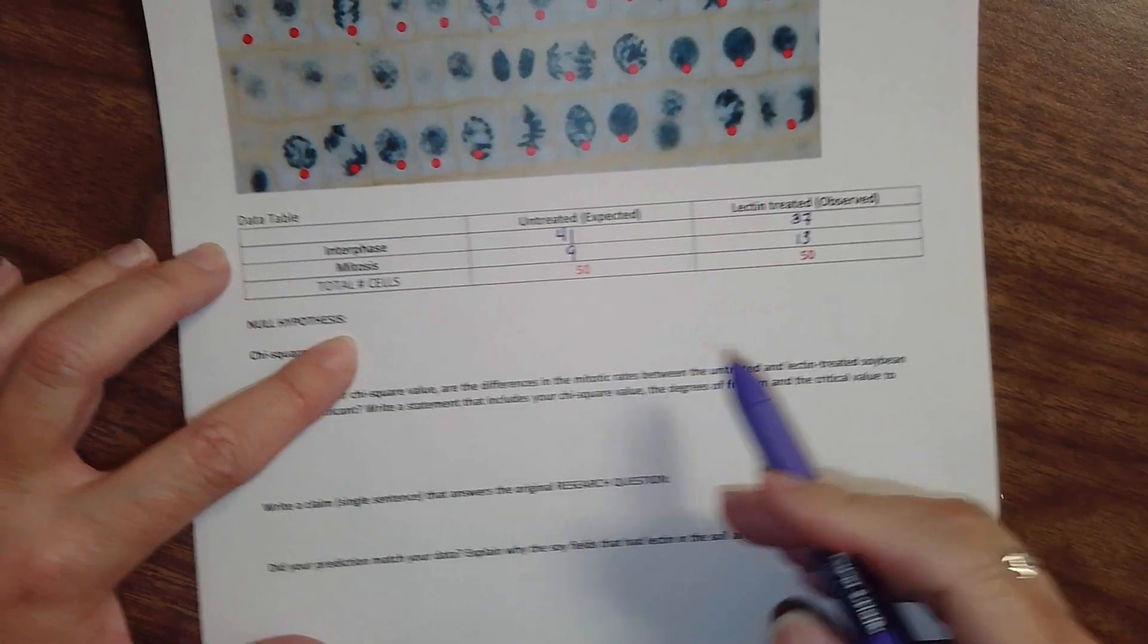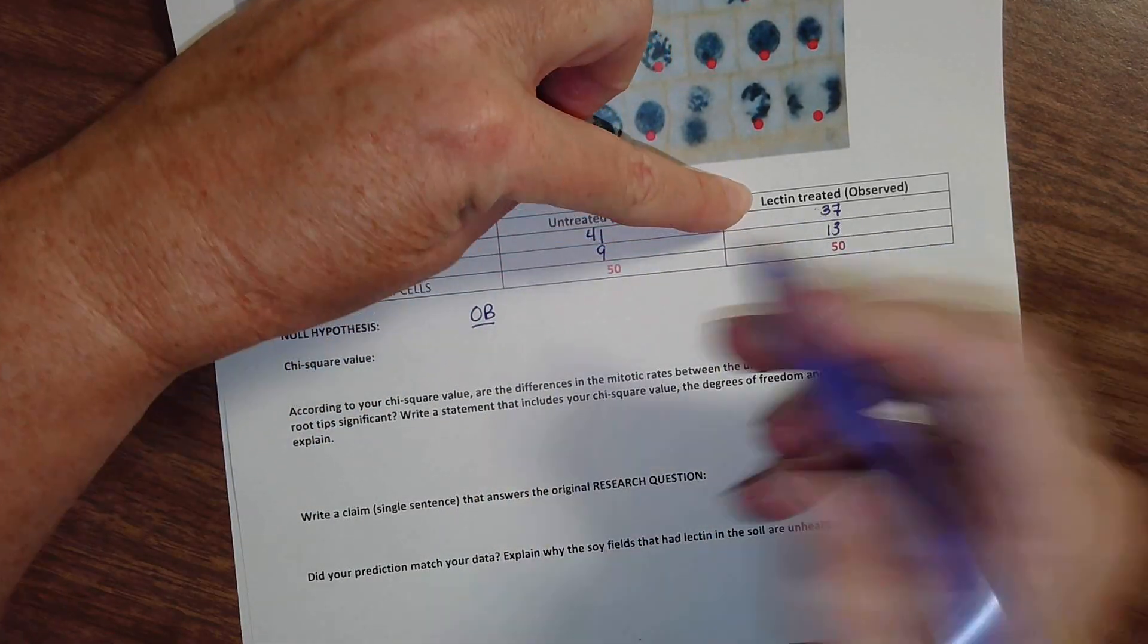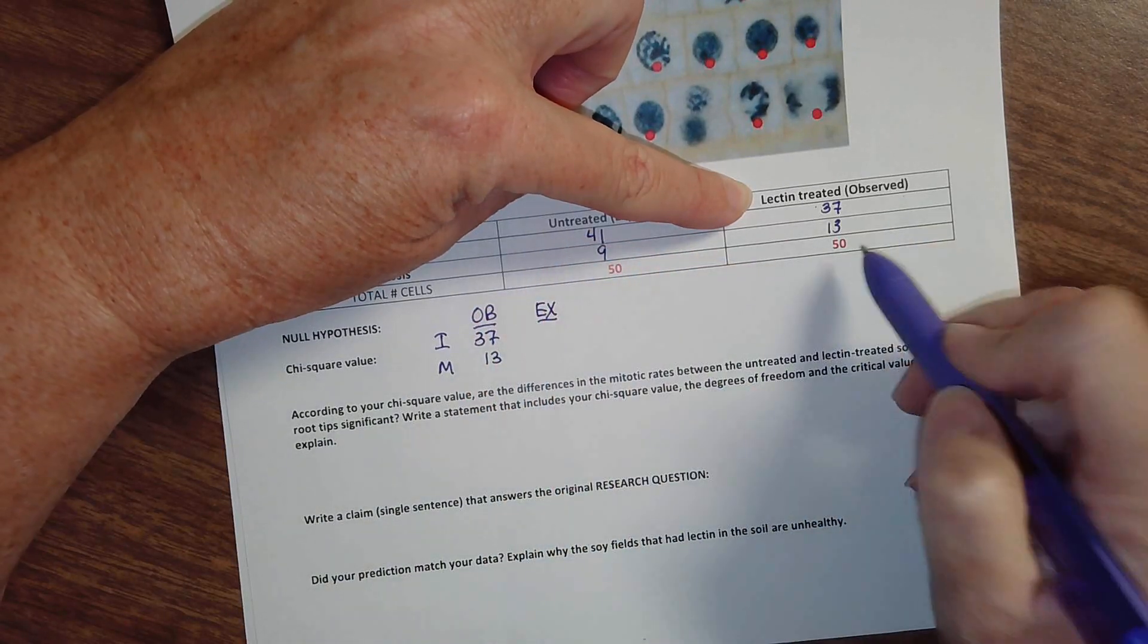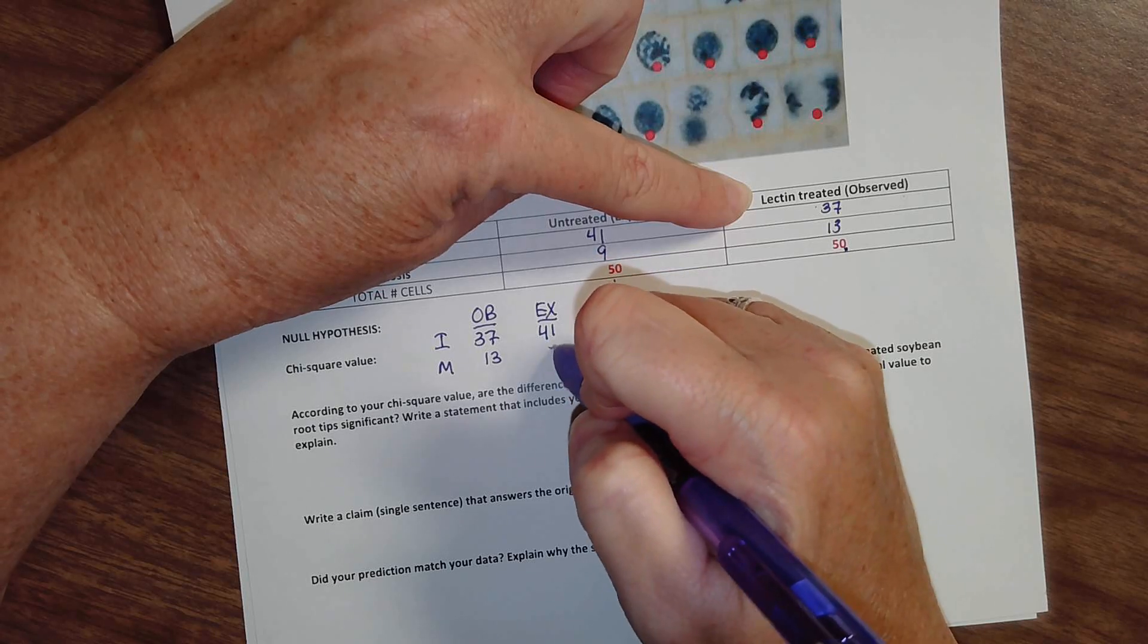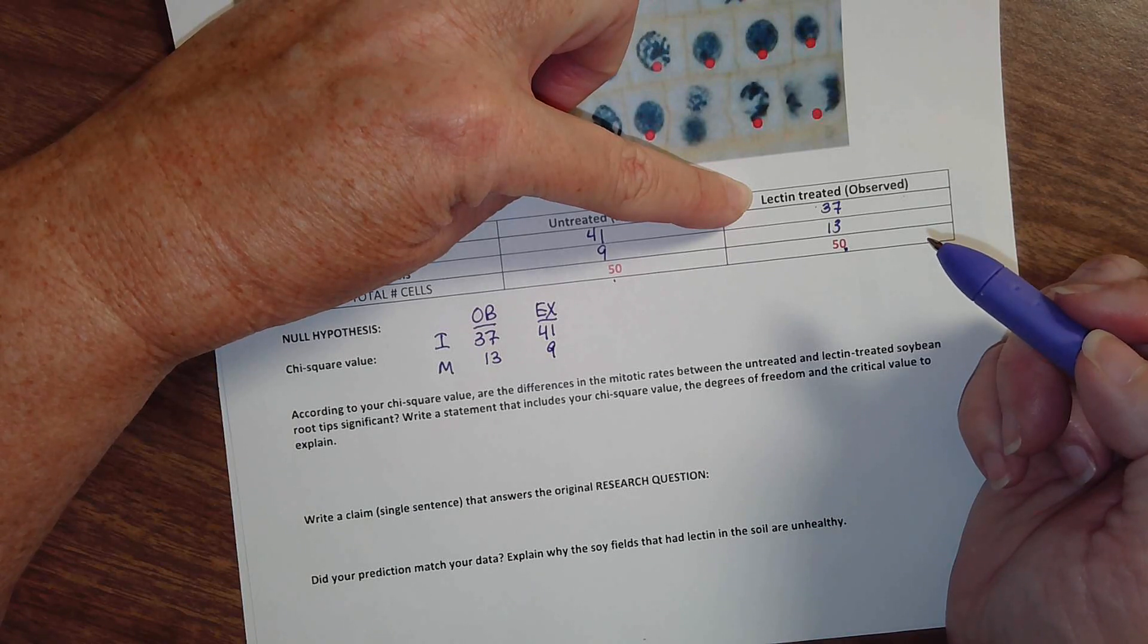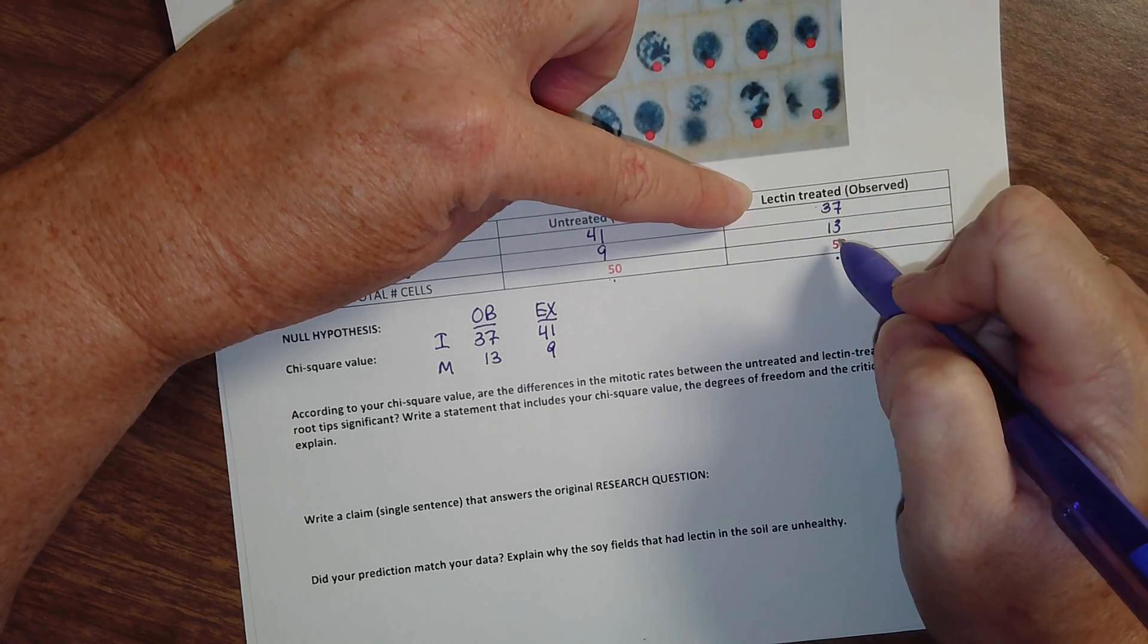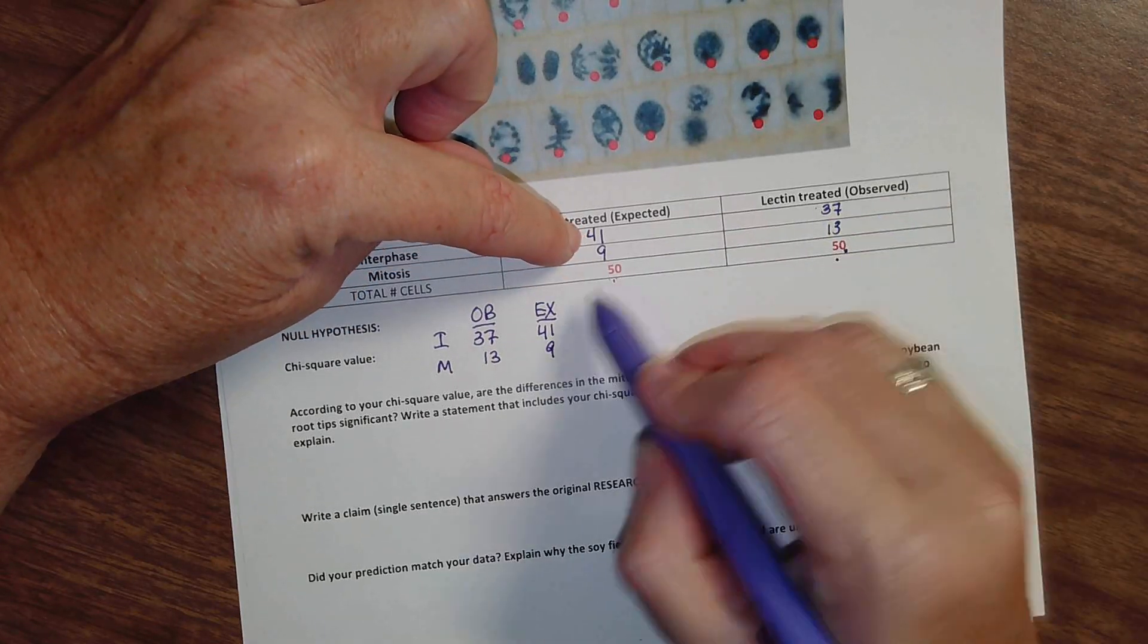The chi-square is going to tell us if that null hypothesis is statistically accurate. So the way you go about working this problem, at least the chi-square part, put your observed. Your observed, it tells us here, is the lectin treated. We have interphase and mitosis, so the observed were 37 and 13. What I would have expected had I had 50 cells, and I did, I had the same number of cells, so this is just my expected data. You don't have to multiply by percentages. The reason that you had to multiply by percentages for the last chi-square was because these totals were different. So in other words, if I had 50 cells, I would expect them to be in this percentage. And since I've already got 50, it's the same number.